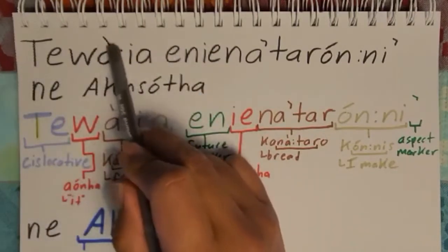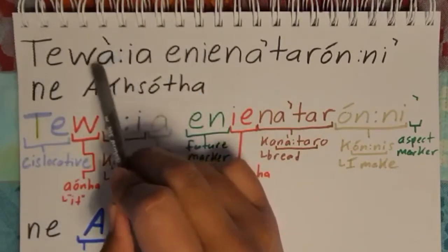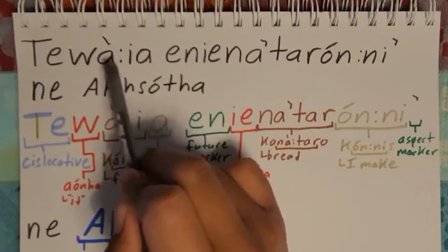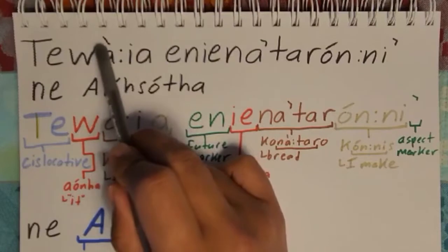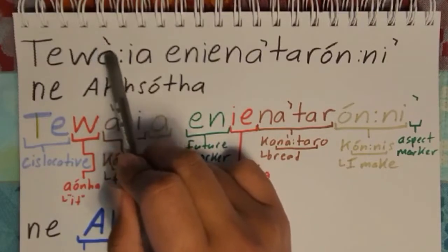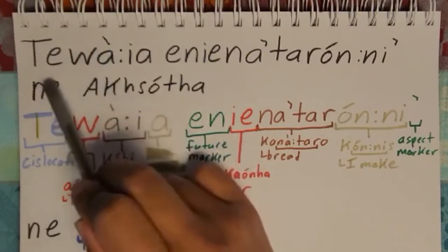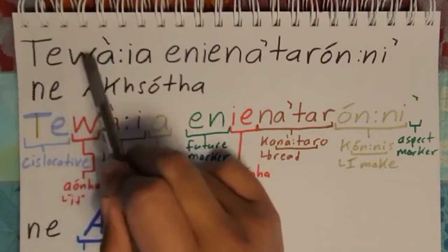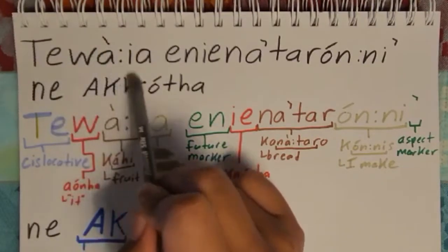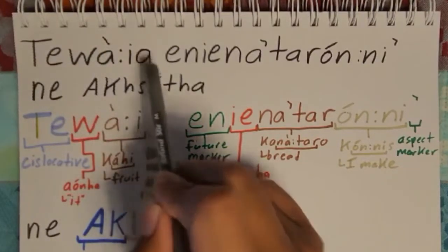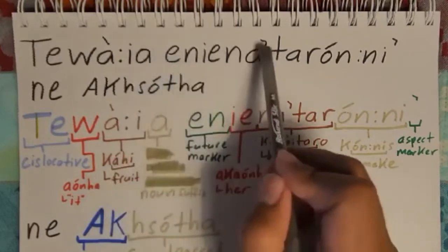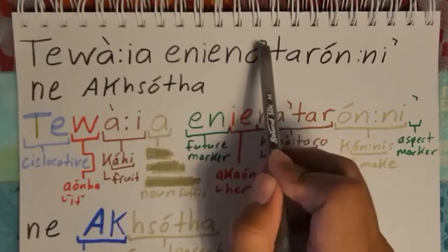This is a falling tone, or what we call a downstress. Because it's a falling tone, your voice is going to fall. And this is a glottal.